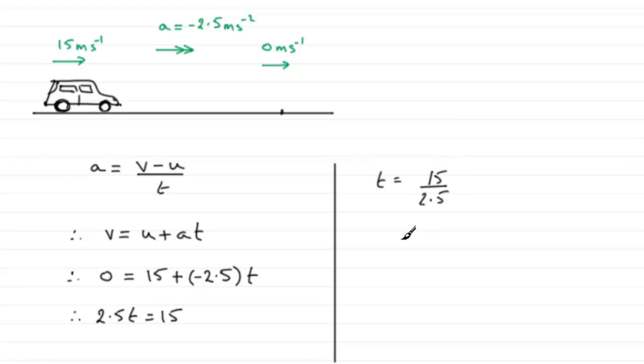If you work that out, t comes out to exactly 6 seconds. But do take care over that acceleration. I can see a lot of people just putting 2.5 in there and fudging this, getting a minus here and coming out with a minus time. If you do that, obviously time can't be negative.